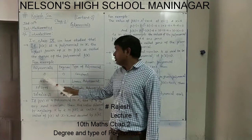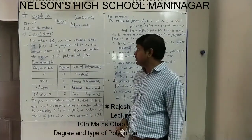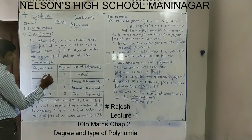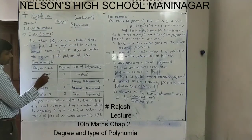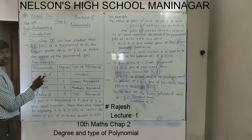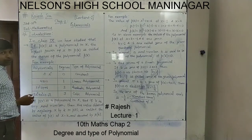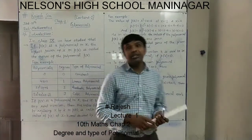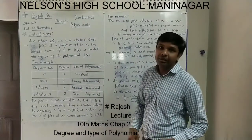For example, here we have the polynomial 8. This 8 does not have any variable x or y. Since there is no variable, we can consider placing x raised to 0 with 8. Because x raised to 0, or any variable raised to 0, has value 1. So 8 times 1 equals 8. So x raised to 0 is the highest power in this case, meaning the degree is 0. When only real numbers are given with no variables, the degree will be 0, and that type of polynomial is called a constant polynomial.